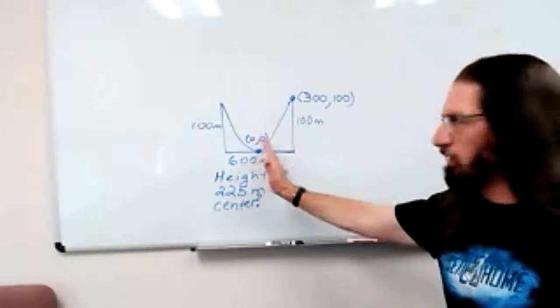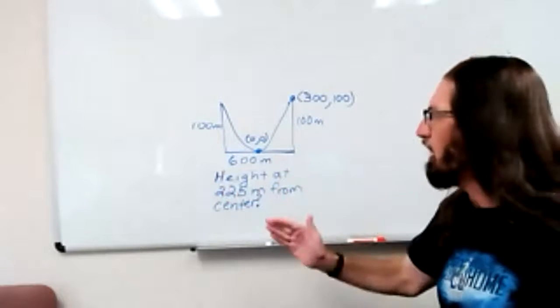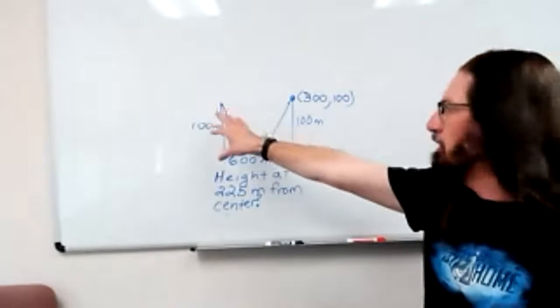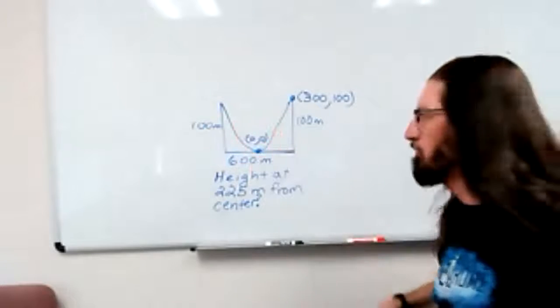Since that's the center that's splitting up into 300 meters and 300 meters to either side. And yes, that's negative 300 comma 100. But we only need to know one of them.